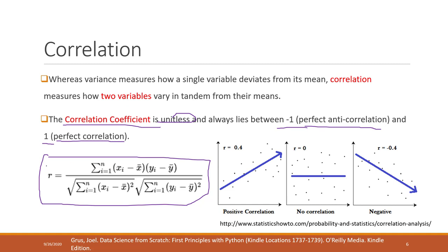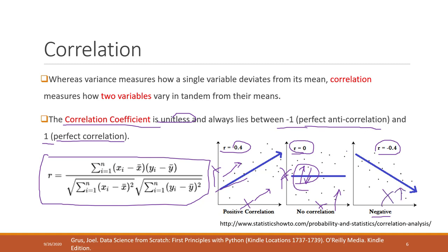Here is a visualization showing different correlation values. If X and Y have a correlation of positive 0.4, they are positively correlated — when X increases, Y also increases. If the correlation coefficient is zero, there is no correlation — when X increases, Y might increase or decrease with no obvious relationship. A negative correlation coefficient means when X increases, Y decreases.